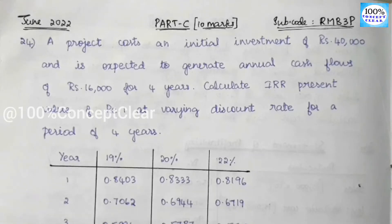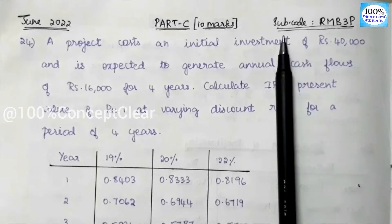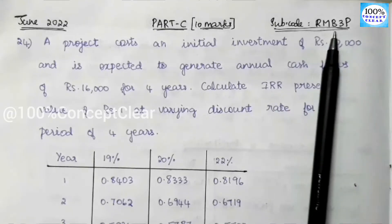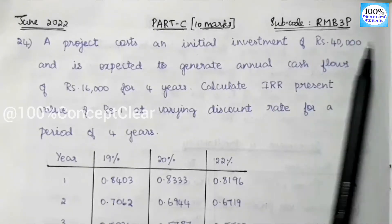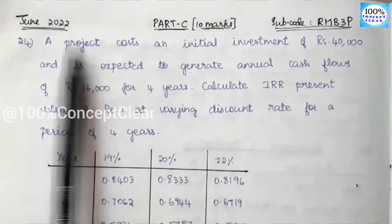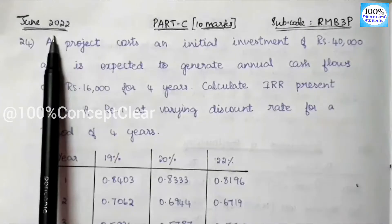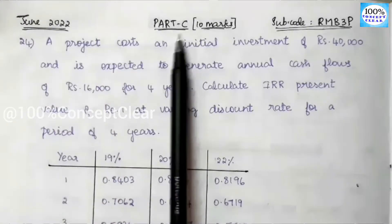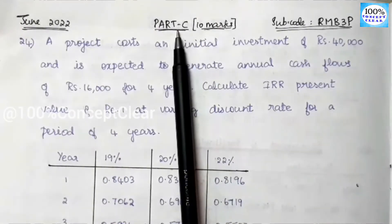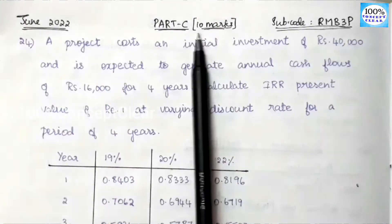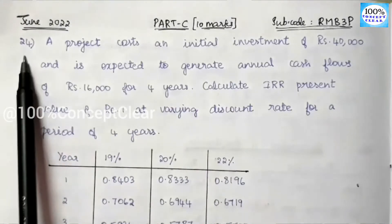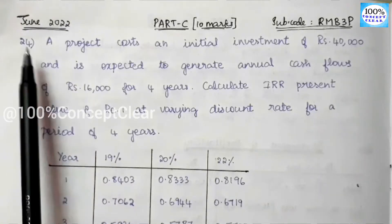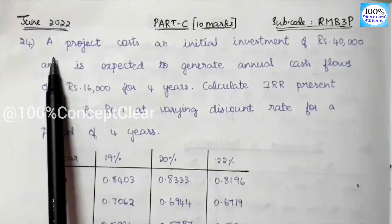In this video, we have a financial management subject. The subject code is RMB3P. We can answer this subject for June 2022. That is Part C, which is 10 marks. So we can answer this question.